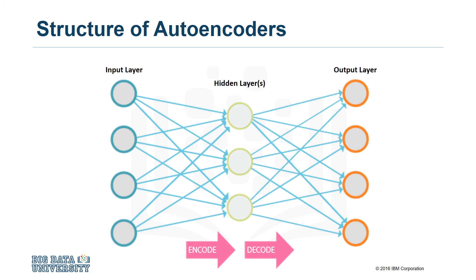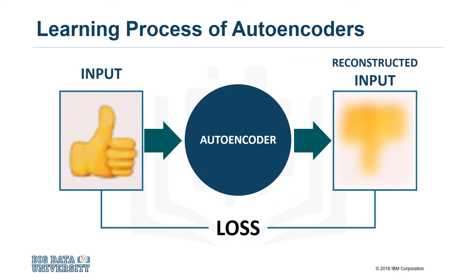Most autoencoders are shallow networks with an input layer, a few hidden layers, and an output layer. As we saw before, RBMs are autoencoders with only two layers. Autoencoders use backpropagation in their learning process. Instead of cost, the metric used to assess the quality of the network is loss, which is the amount of information lost in the reconstruction of the input. The goal is to minimize the loss, so that we have an output that's as close to the input as possible.